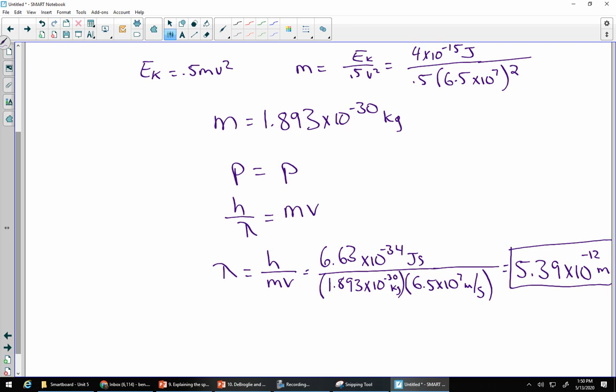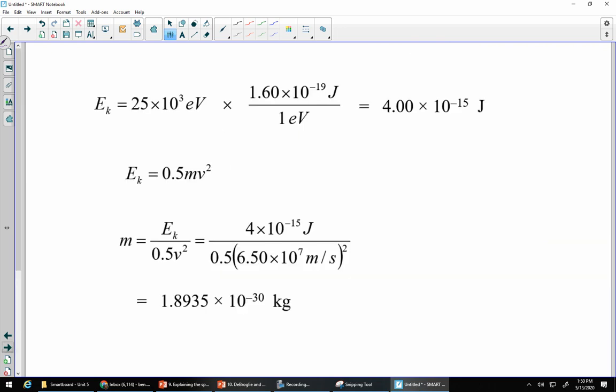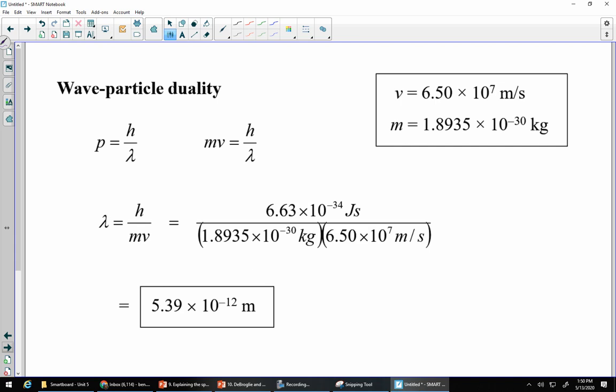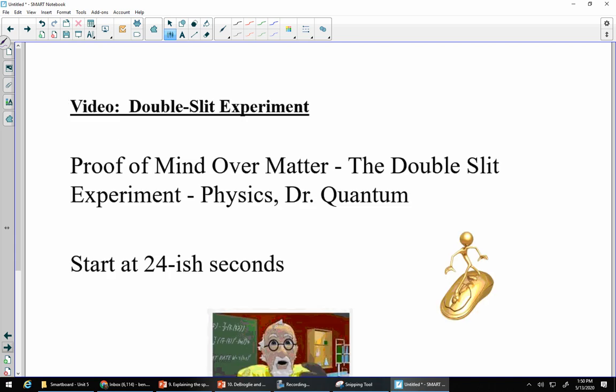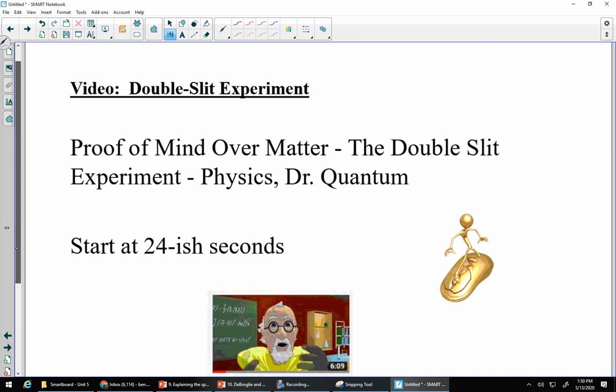We can say the wavelength must be equal to Planck's constant over mv. With Planck's constant, we're using our standard kilograms, meters, seconds. So we want the version with regular joules, because joules is kilogram meter squared over seconds squared. That's 6.63 times 10 to the negative 34 joule seconds, divided by the mass 1.893 times 10 to the negative 30 kilograms, and then the speed was 6.5 times 10 to the 7 meters per second. Do not square that one. In kinetic energy we're squaring, in this one not so much. Plug the numbers in and it turns out to be 5.39 times 10 to the power of negative 12 meters. That's tiny, but it's not so tiny that it's unnoticeable for something that is 10 to the negative 30 kilograms.